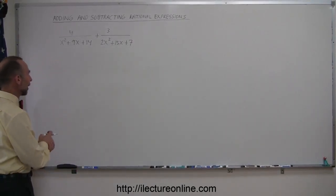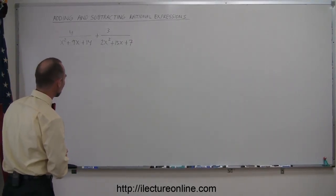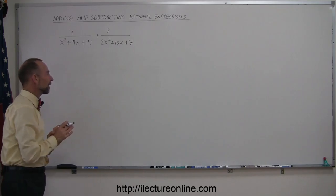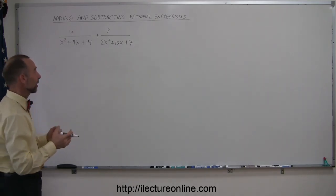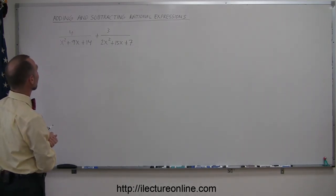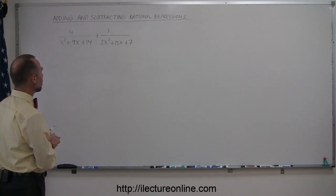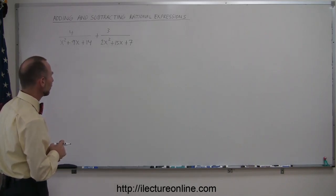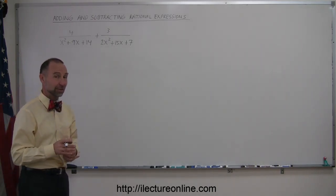Here's an example of how to add rational expressions. In this case, we have an addition of two rational expressions, two things that have expressions in them that look like fractions. Notice that in the denominator, we have two polynomials, or two trinomials. There's three terms in each case, and they're probably factorable.